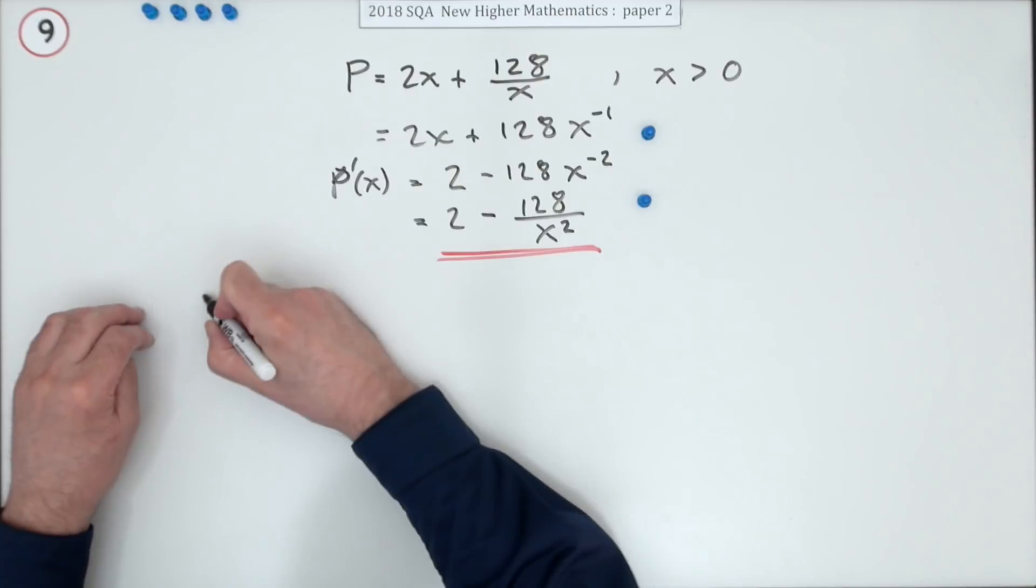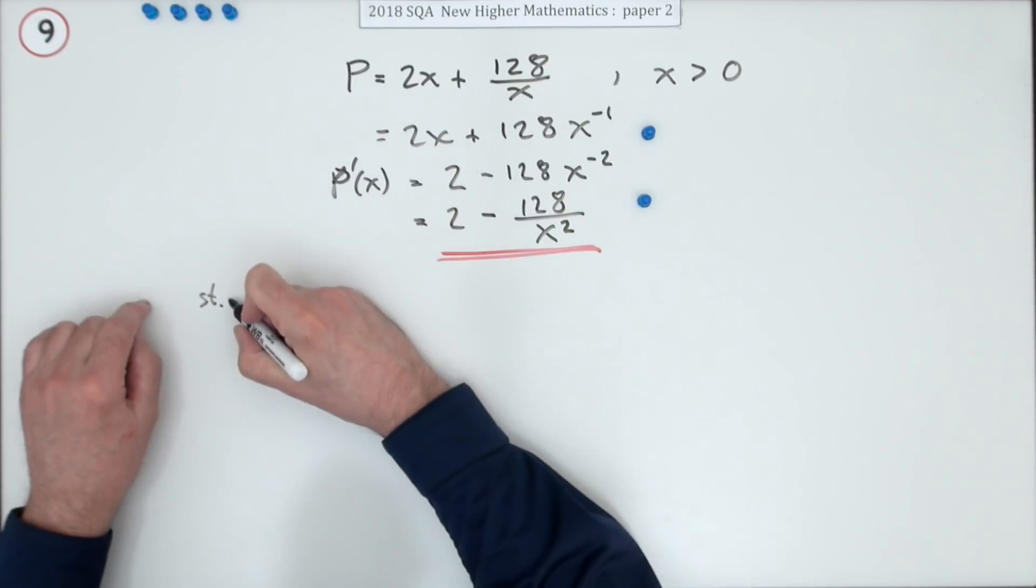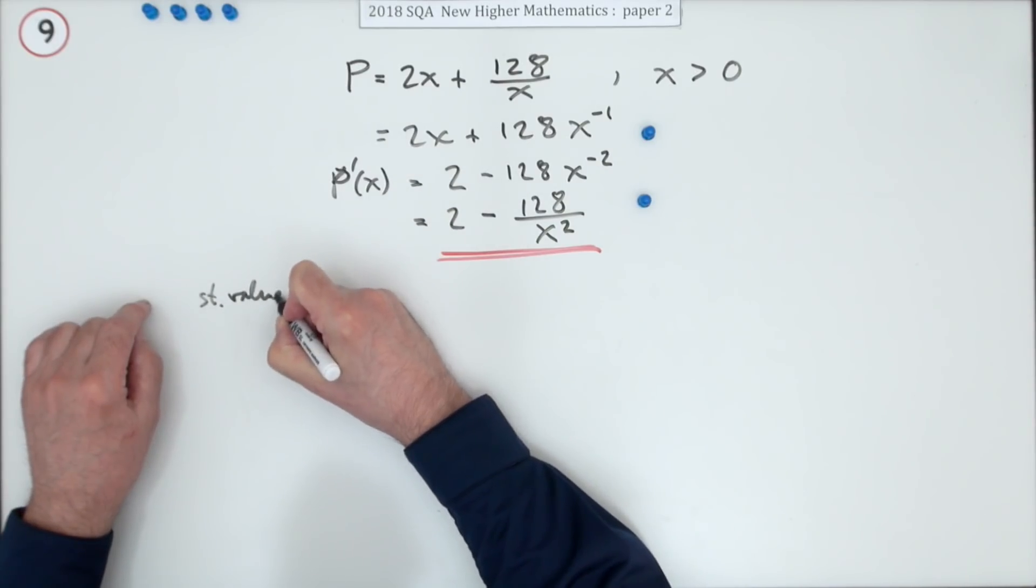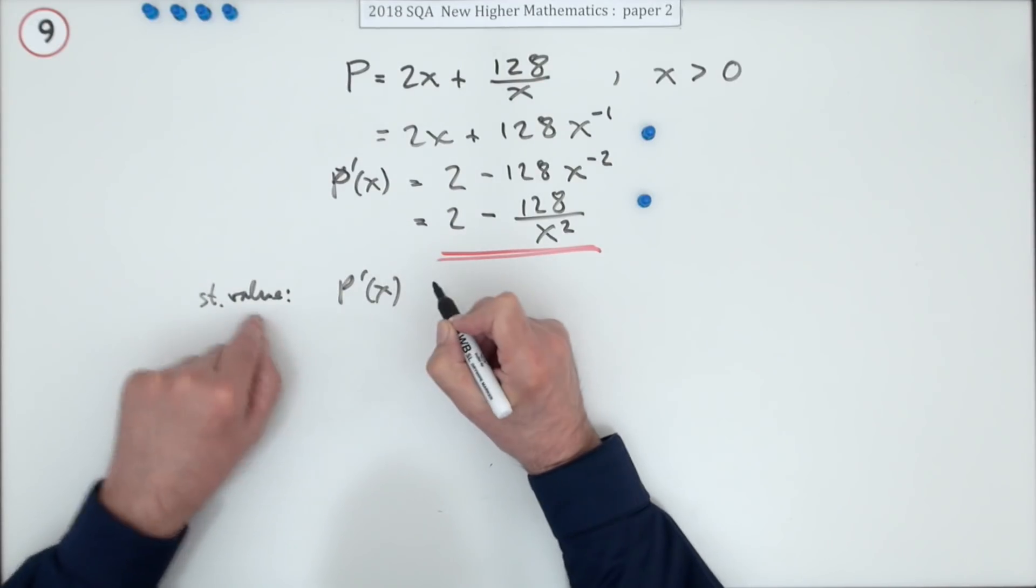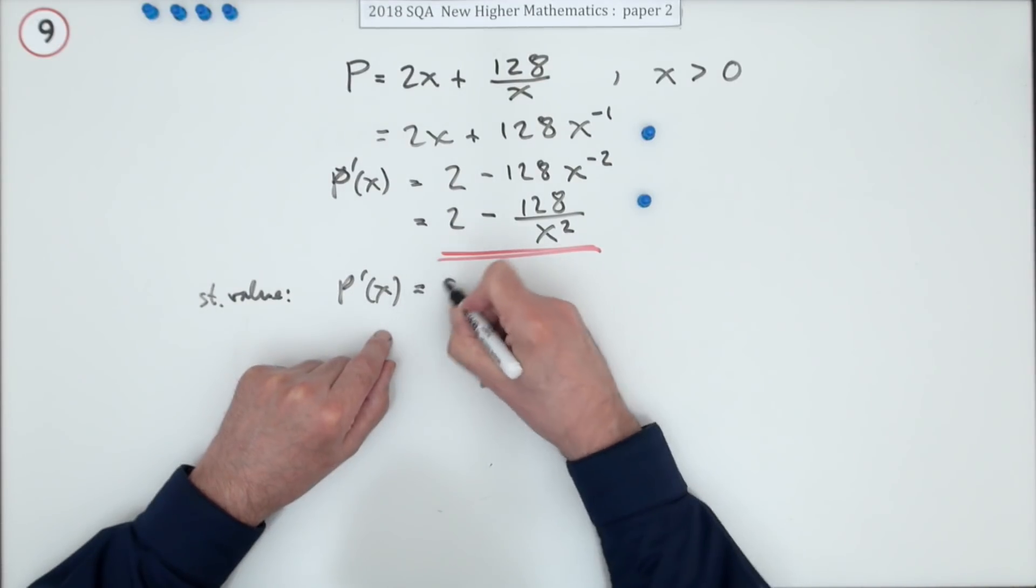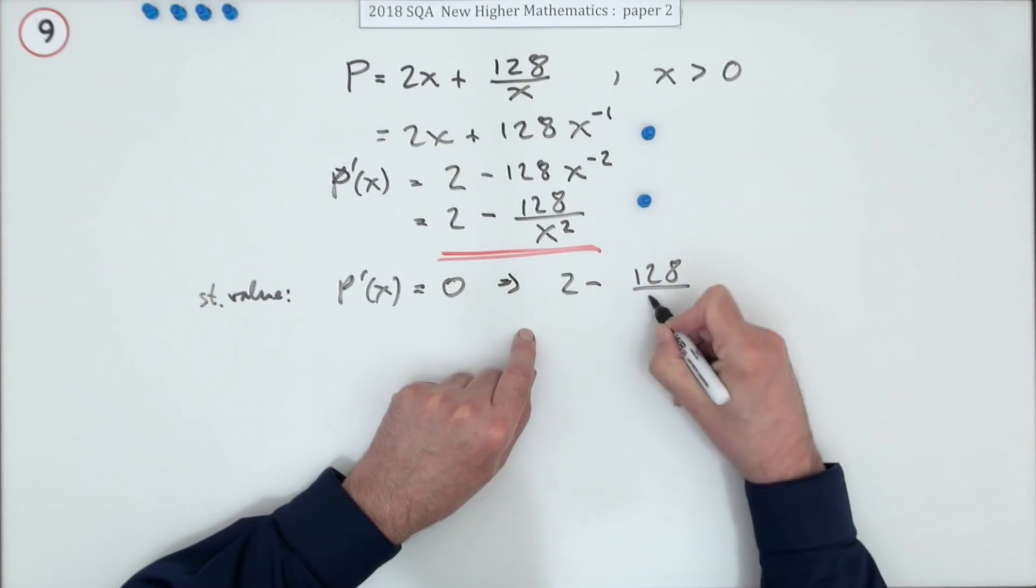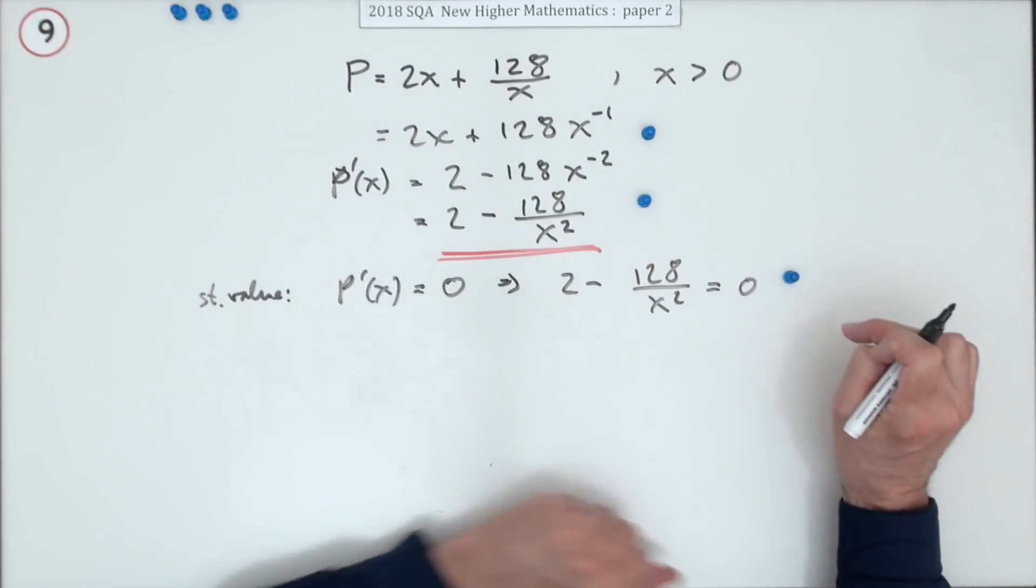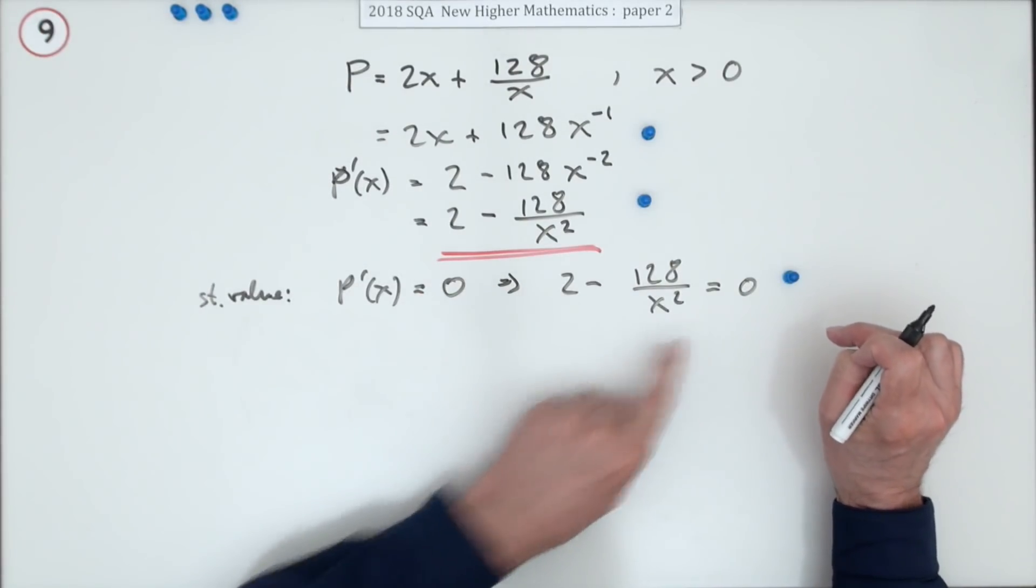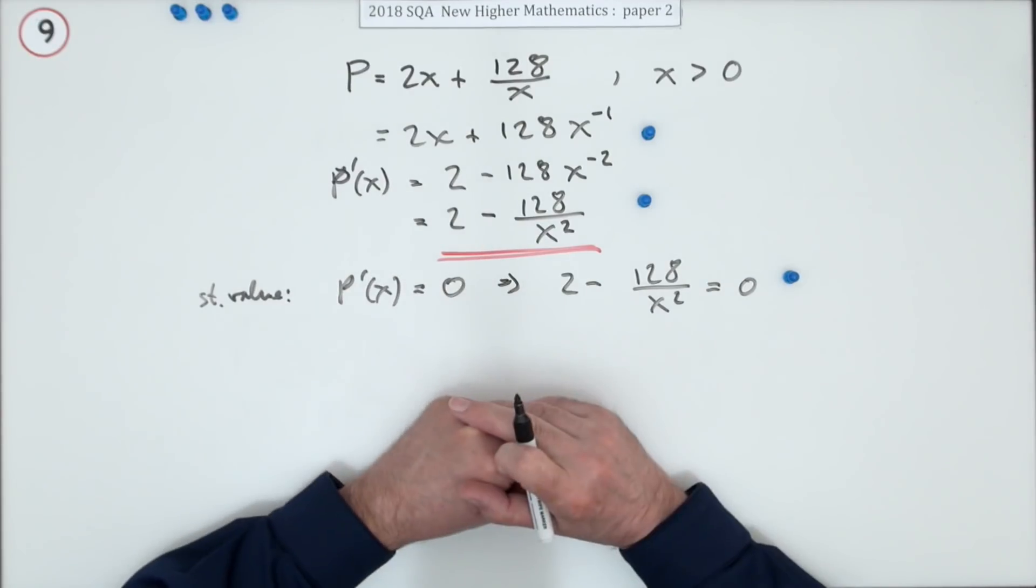That's always a better form because then if I want to evaluate P dashed, that'll show the value of X that you're putting in. Well, that will go down to just 2. Multiply by the power, so minus 128. Take 1 off the power, drops to negative 2. Now, that would be the second mark, except you're going to be using it, so you may well get the mark there, but you should really put it back into the form of over X squared: P'(x) = 2 - 128/x².